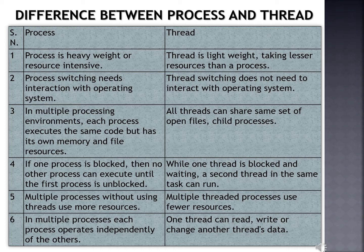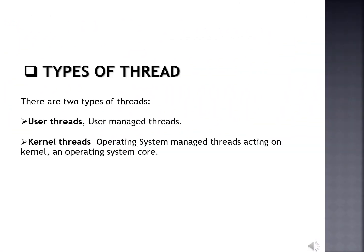In multiple processes, each process operates independently of the others. One thread can read, write, or change another thread's data. The two types of threads are user threads and kernel threads. User threads are above the kernel and without kernel support — these are the threads that application programmers use in their programs. Kernel threads are supported within the kernel of the operating system. All modern operating systems support kernel level threads, allowing the kernel to perform multiple simultaneous tasks and to service multiple kernel system calls simultaneously.